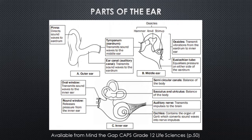The middle ear consists of the ossicles, which are the smallest bones in your body found in your ear. There are three of them: the hammer, the anvil, and the stirrup. It also consists of the Eustachian tube. The inner ear consists of the oval and round windows, the semi-circular canals, the saccule and utricle, the auditory nerve, and the cochlea.